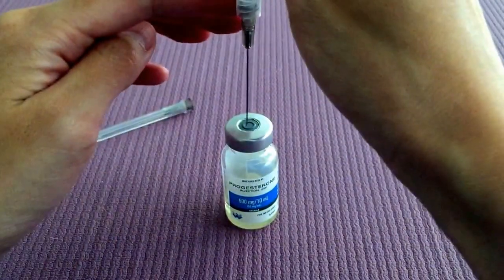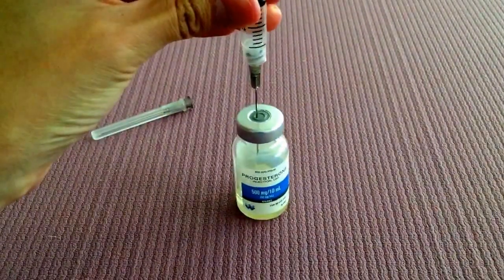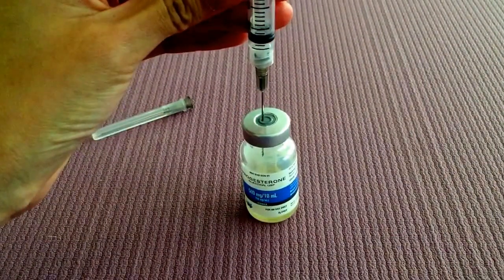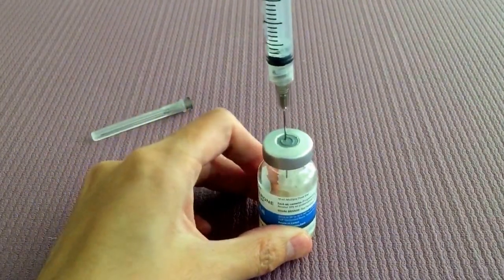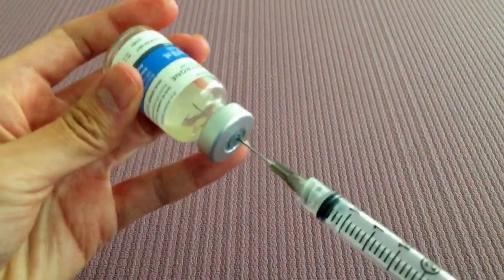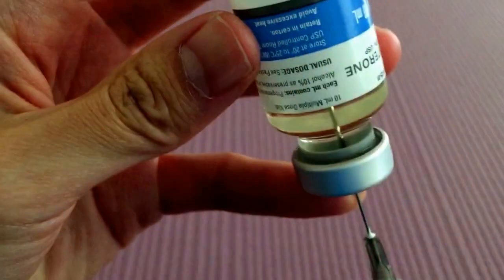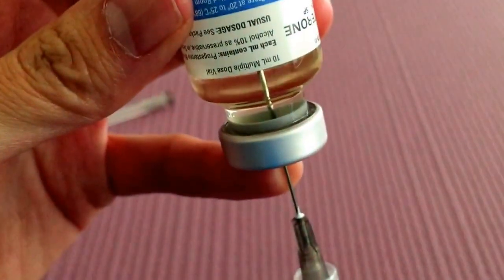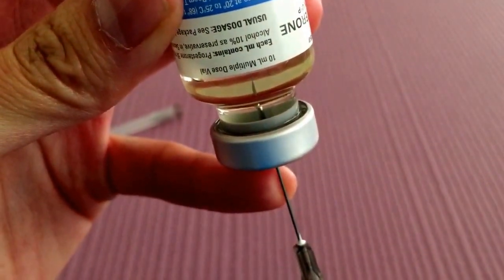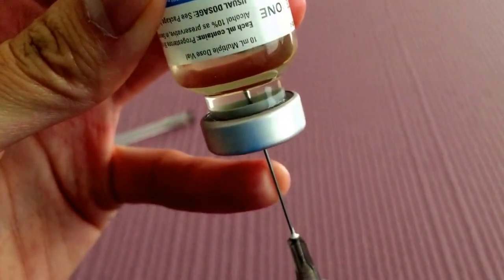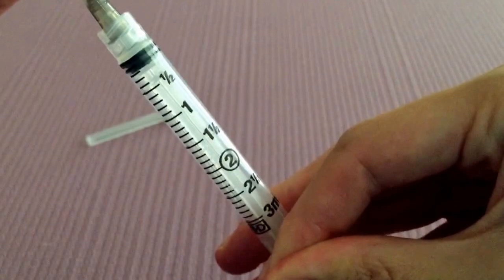So let's do that and push the air in and make sure your thumb is still on the plunger. The next thing you're going to do is flip this upside down and just be careful not to bend the needle. And what you want to do is draw the needle tip underneath the water line, or I should say the oil line in this case. And then once you're ready, you can start drawing up the medication.